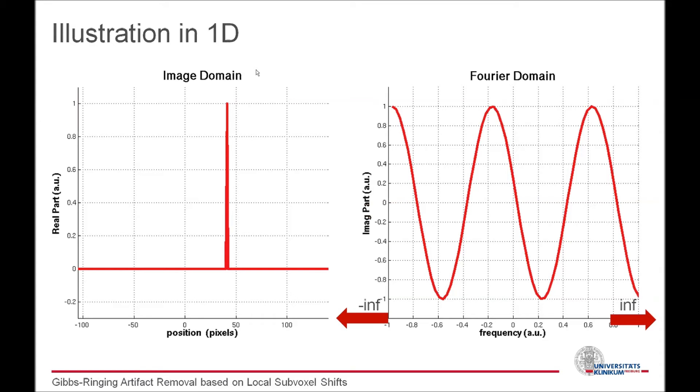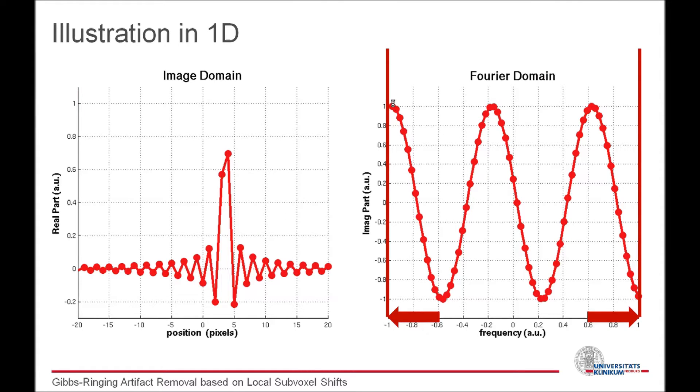To simplify things, let's first look at a very simple object in one dimension, a simple delta peak. In the Fourier domain, this is represented by a monochromatic frequency of infinite length. If we reconstruct the object from a bounded box of this wave, we end up with an image with oscillations, where you clearly can see the SYNC-like shape of the point-spread function.